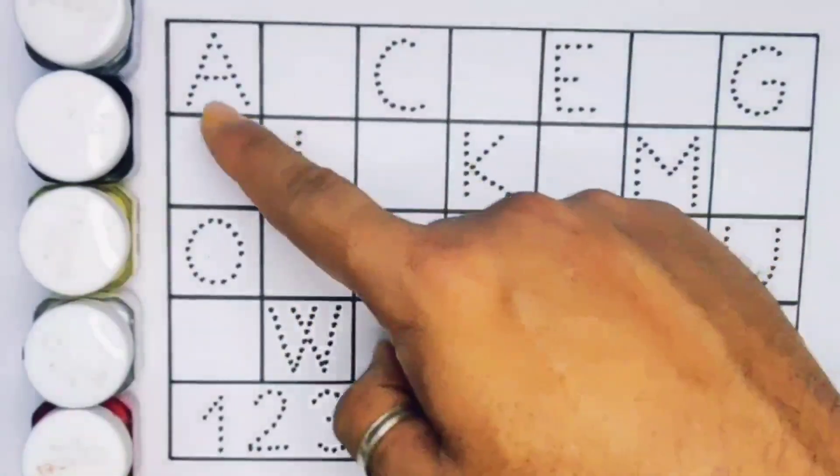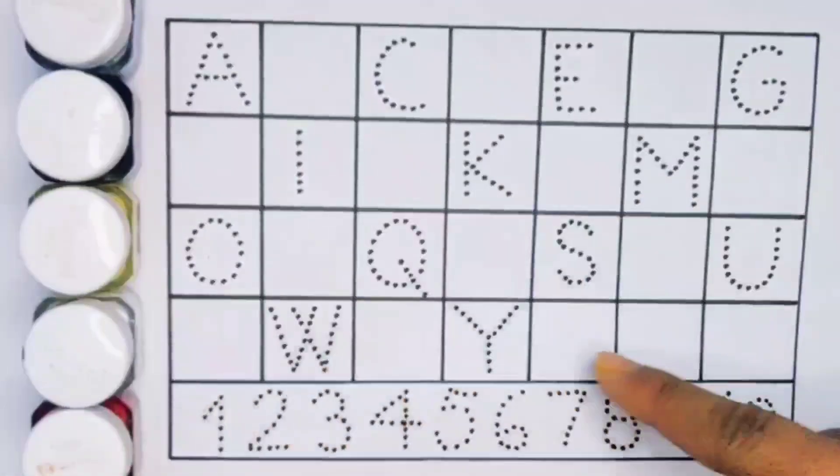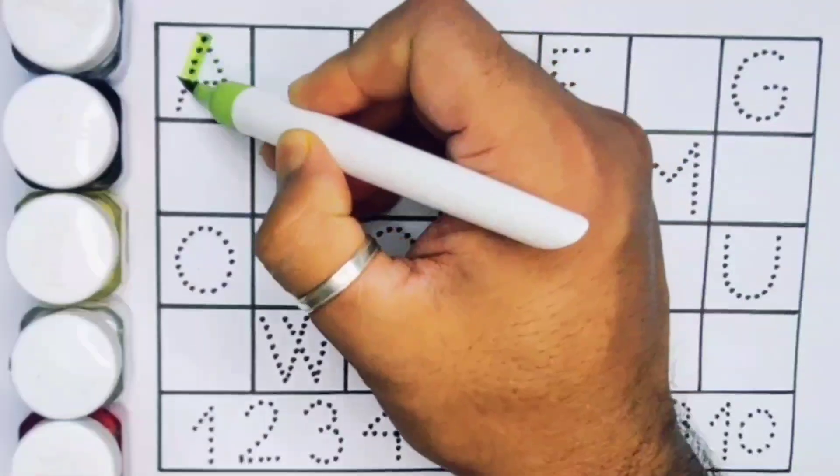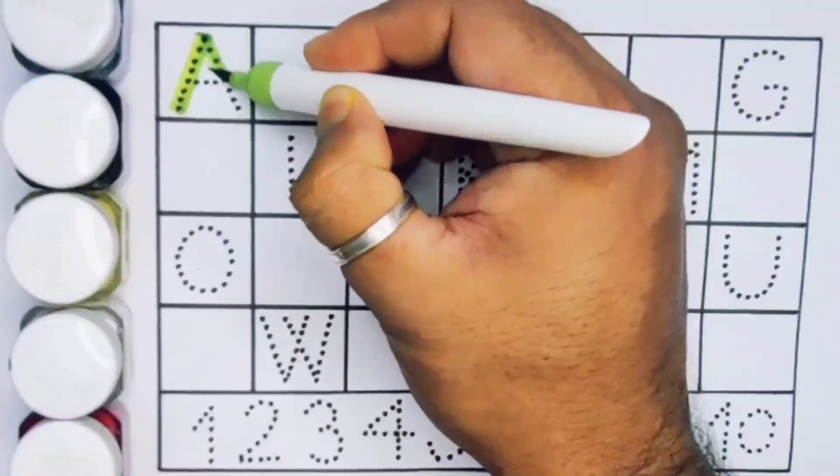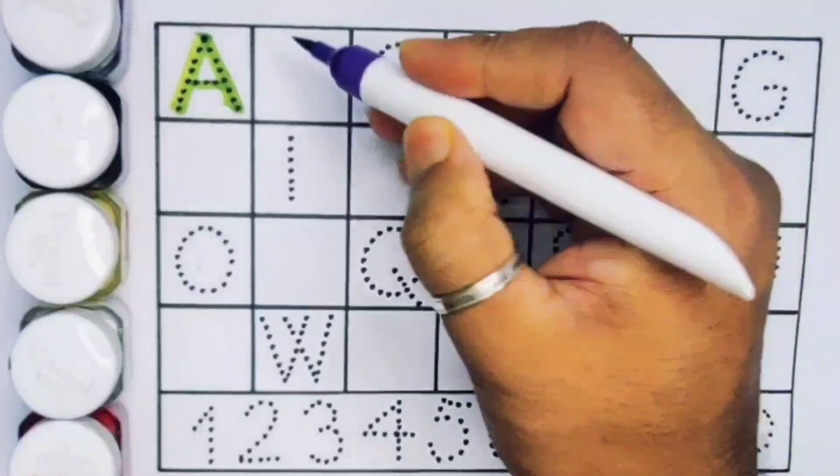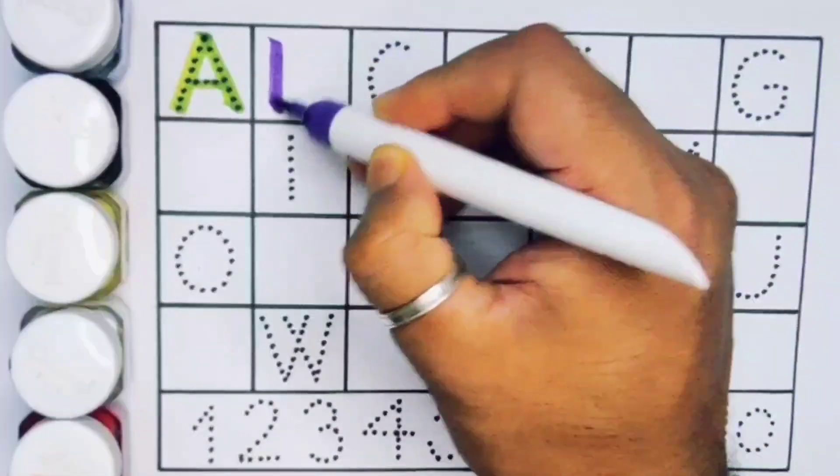Now let's learn the alphabet A to Z and numbers counting 1 to 10. First A, A for Alligator. Next B, B for Butterfly.